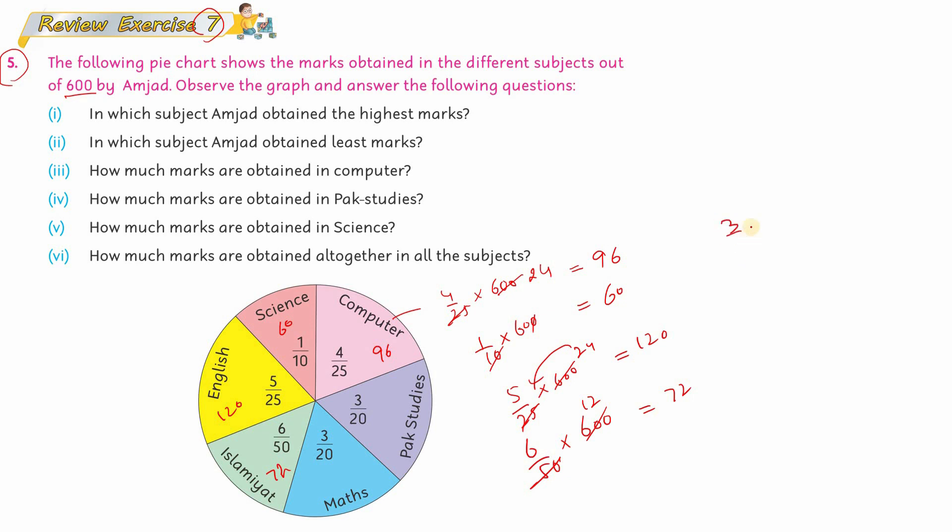English has 120. Now let's check Maths. For Maths it is 3 by 20 multiplied by 600. The total is 600, which is why we are multiplying all fractions with it. When this multiplies, it gives 30, then 30 into 3 gives 90. So Amjad has obtained 90 marks in Maths.